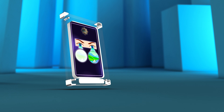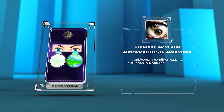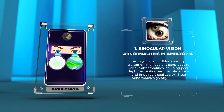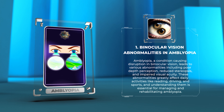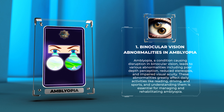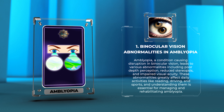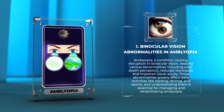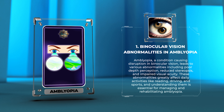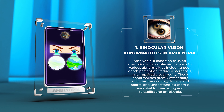Amblyopia, a condition causing disruption in binocular vision, leads to various abnormalities including poor depth perception, reduced stereopsis, and impaired visual acuity. These abnormalities greatly affect daily activities like reading, driving, and sports, and understanding them is essential for managing and rehabilitating amblyopia.